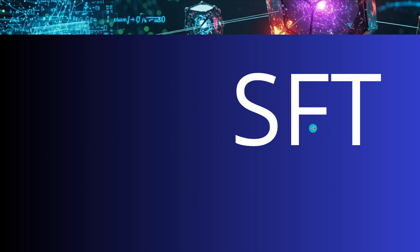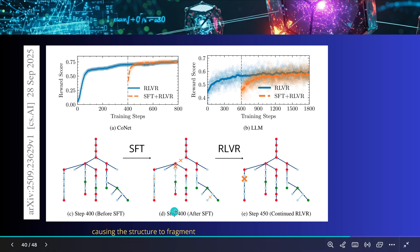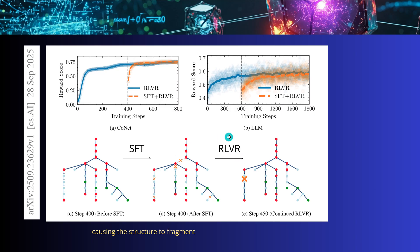We now understand why models that have formed a concept web via reinforcement learning with verifiable rewards are so susceptible to catastrophic forgetting when subsequently fine-tuned — it is a topological failure, because we cut off the bridge-like connections. Whenever you start with supervised fine-tuning followed by reinforcement learning, the supervised fine-tuning cuts those tree-like connections, causing you to lose complete branches of interdisciplinary knowledge. Then reinforcement learning with a specific reward system repairs them again. With supervised fine-tuning we fragment the structure, and with reinforcement learning we rebuild it.